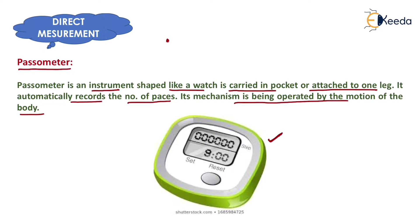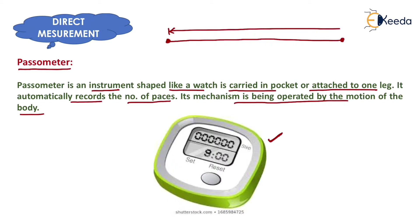Suppose we want to measure the linear distance between two points A and B. We carry the passometer in our pocket, walk along the straight line, and at the end point we read the number of paces taken. That number is then multiplied by the length of one pace to determine the distance between point A and point B.